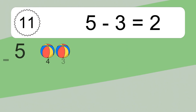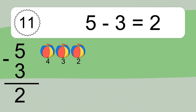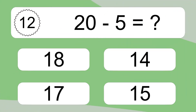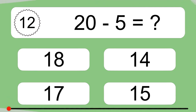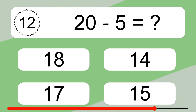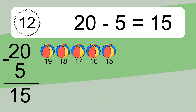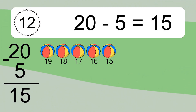5 minus 3 equals 2. Let's count it: 4, 3, 2. 20 minus 5 equals what? 20 minus 5 equals 15. Let's count it: 19, 18, 17, 16, 15.